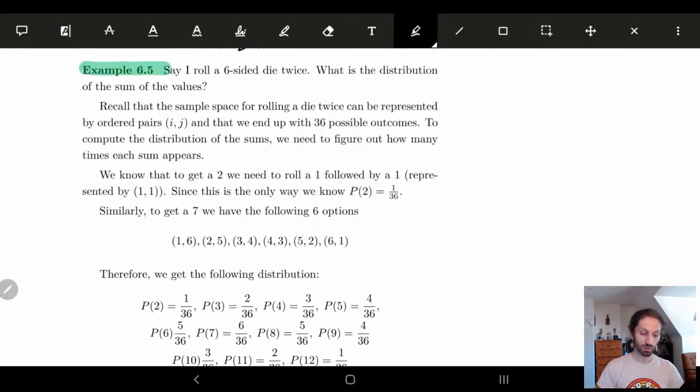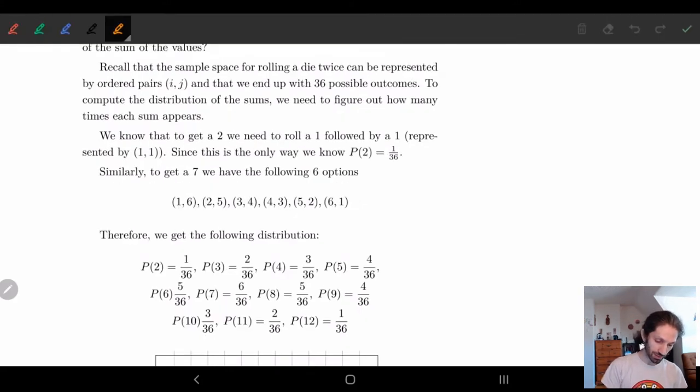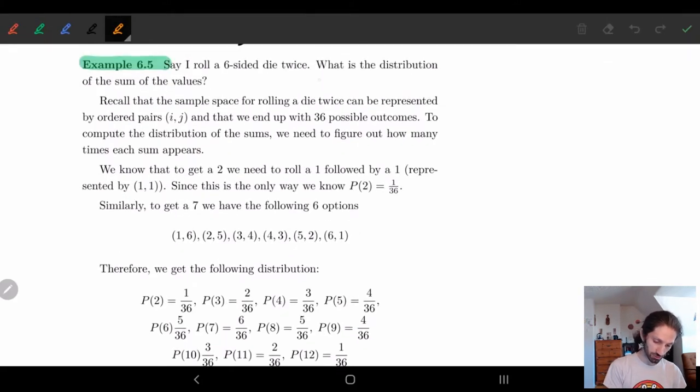So example 6.5. What I'm going to do is I'm going to take a six-sided die and I'm going to roll it twice. So remember when we're doing something like this, and then I'm going to ask what is the distribution of the values? This is what I'm asking. What is the distribution of the sum of the values? So first let's put down the groundwork.